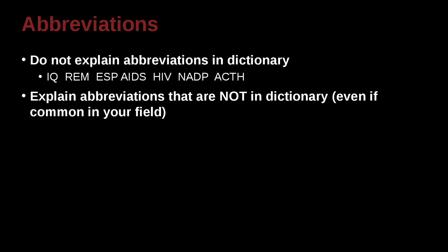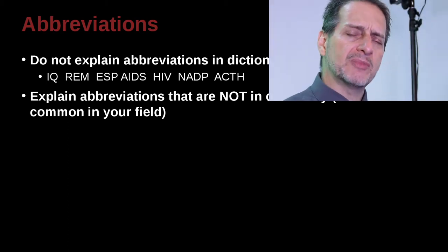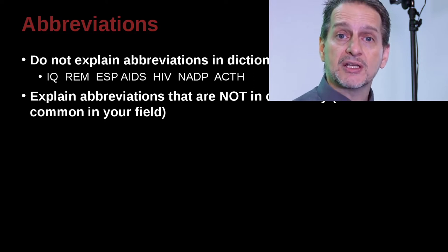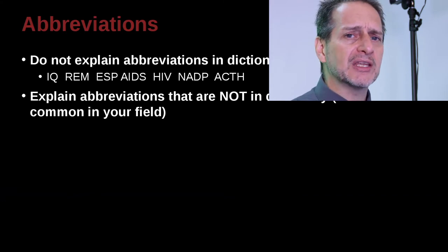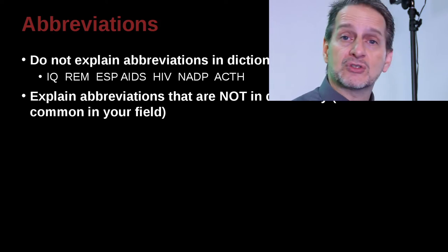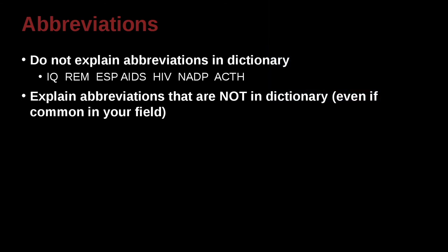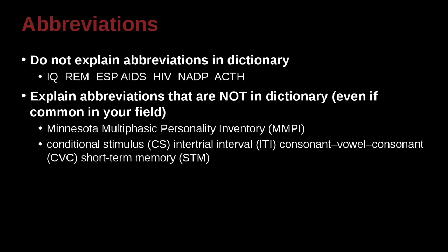Explain abbreviations that are not in the dictionary, even if it's common in your field. Now this I think you need to take with a grain of salt. You need to think about it for a minute, and you need to ask your professor, and I think you need to look at other papers that are published in your area, or other reports, or other books, and see what do they do. And if it's really very, very common, and it's so common in the field that everyone knows it, you may not have to explain it. You can just use the abbreviation. But the rule of thumb for the APA is even if it's common, you go ahead and you explain it the first time if it's not in a dictionary.